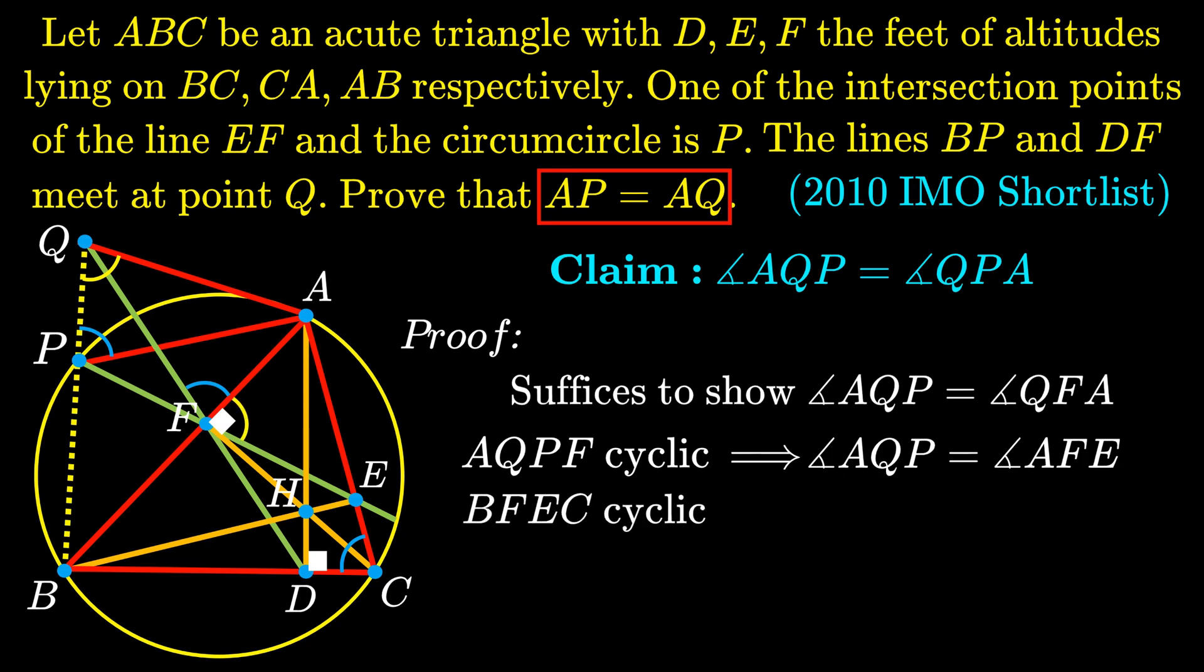Then, similarly, quadrilateral BFEC is also cyclic, as the angles BFC is equal to the angle BEC, which are 90 degrees. So we have the directed angle of AFE is equal to the directed angle of BCE.